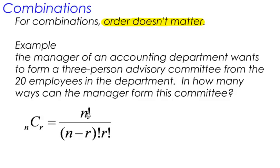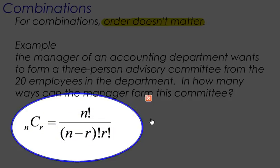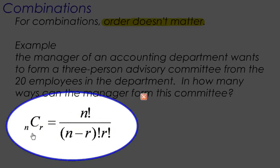We have a similar formula for combinations as we did for permutations. Here's our formula for combinations. How do we use all of this? What does the N stand for? What does the R stand for? Once again, N stands for the total number of objects or things that you are choosing from.